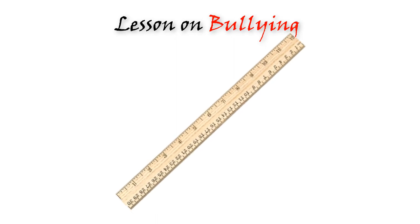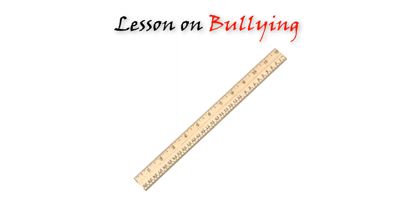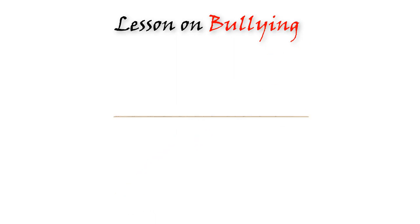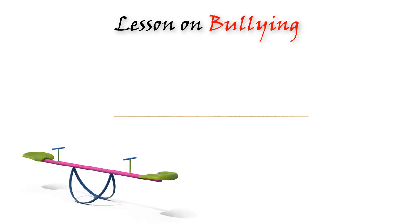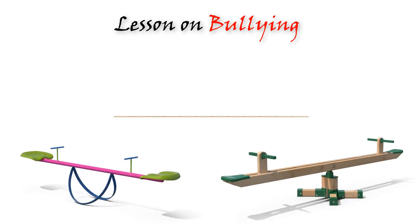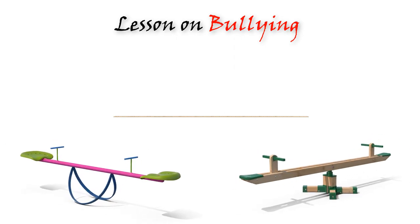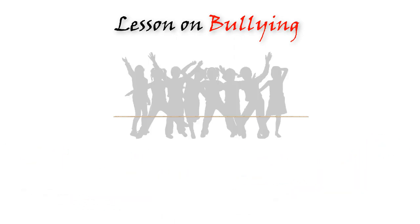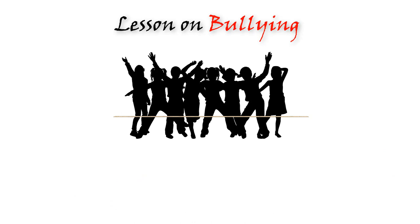Use a ruler or book and hold it flat so viewers see only the thin edge. Announce that it is like a teeter-totter or a seesaw, and this is how it looks when it is balanced. People getting along and making responsible choices keep it in balance.